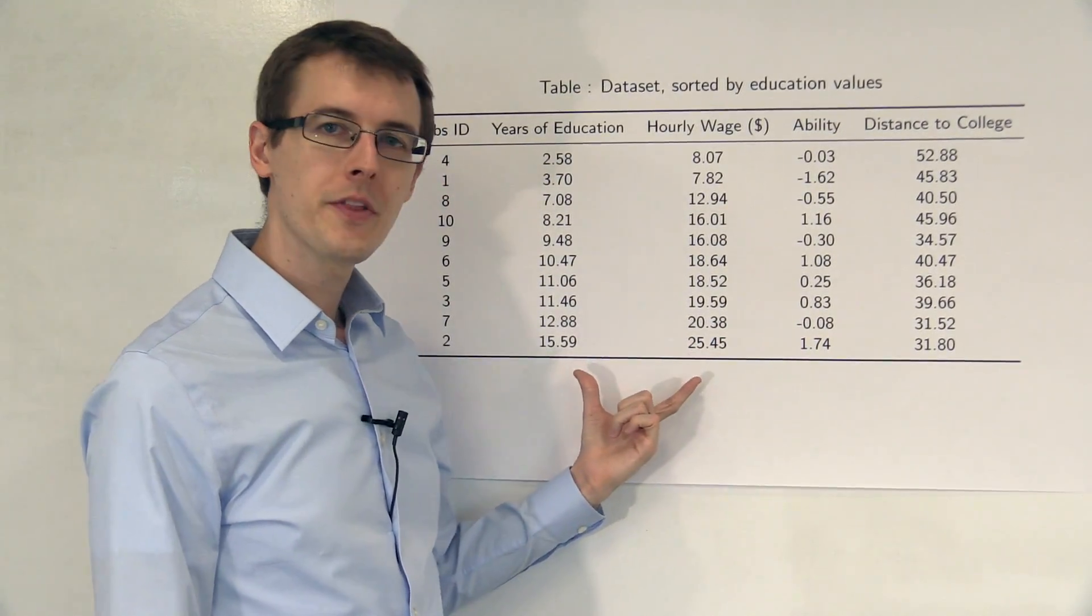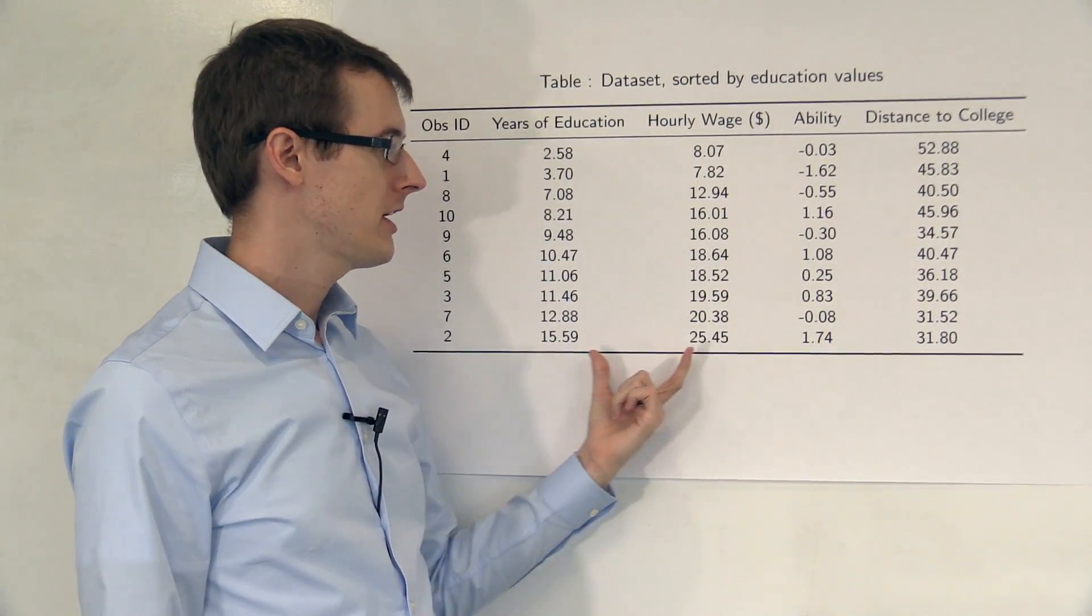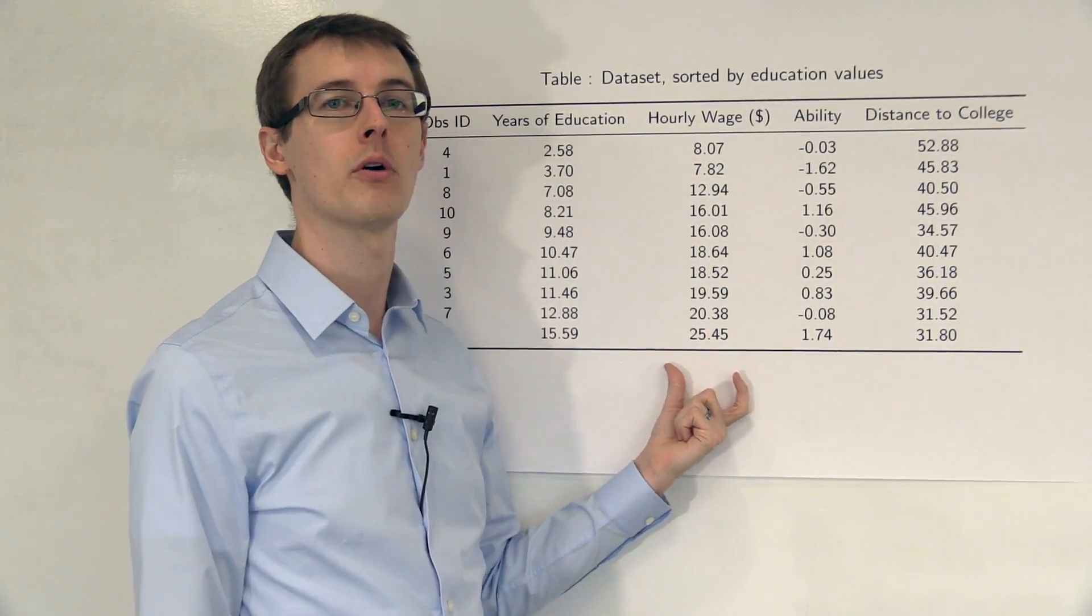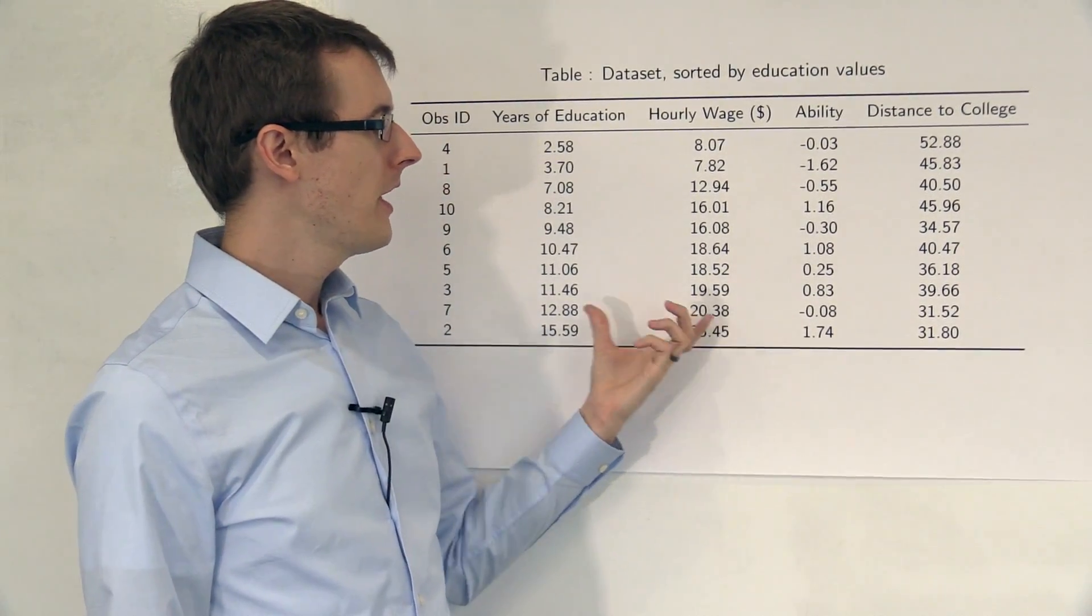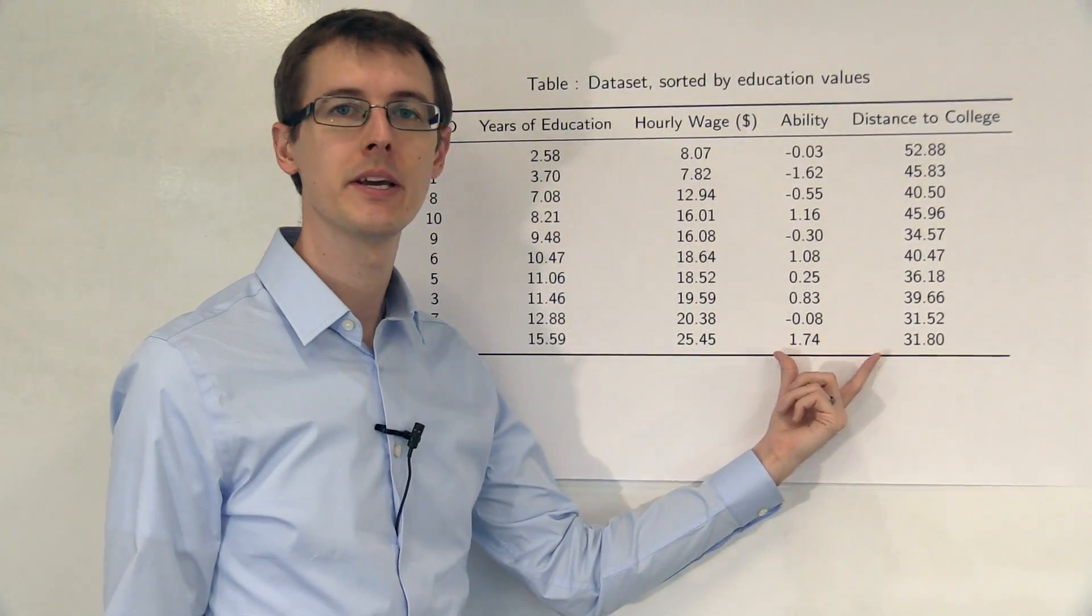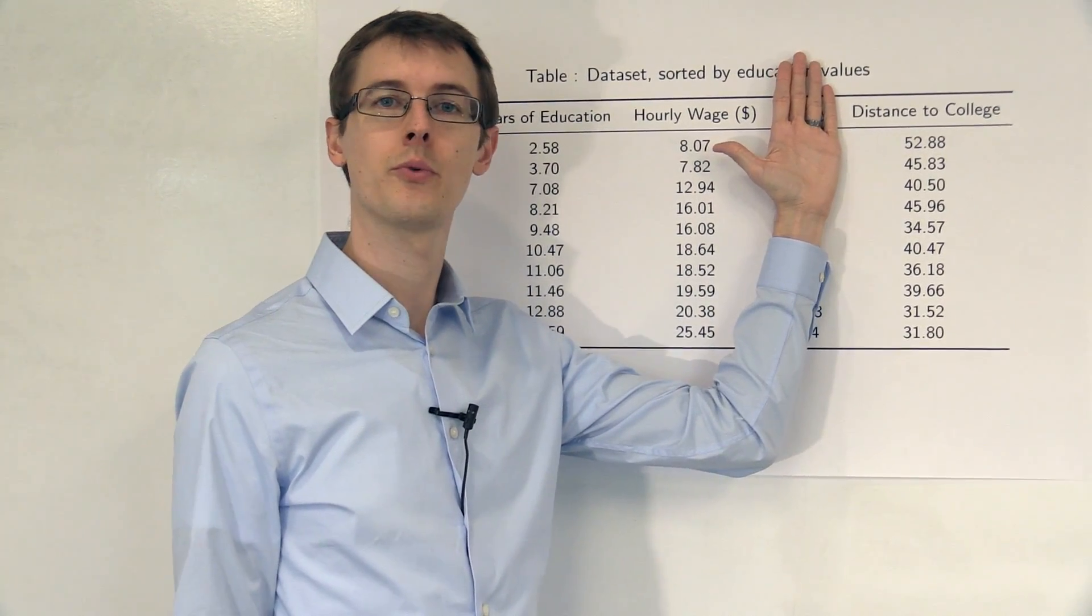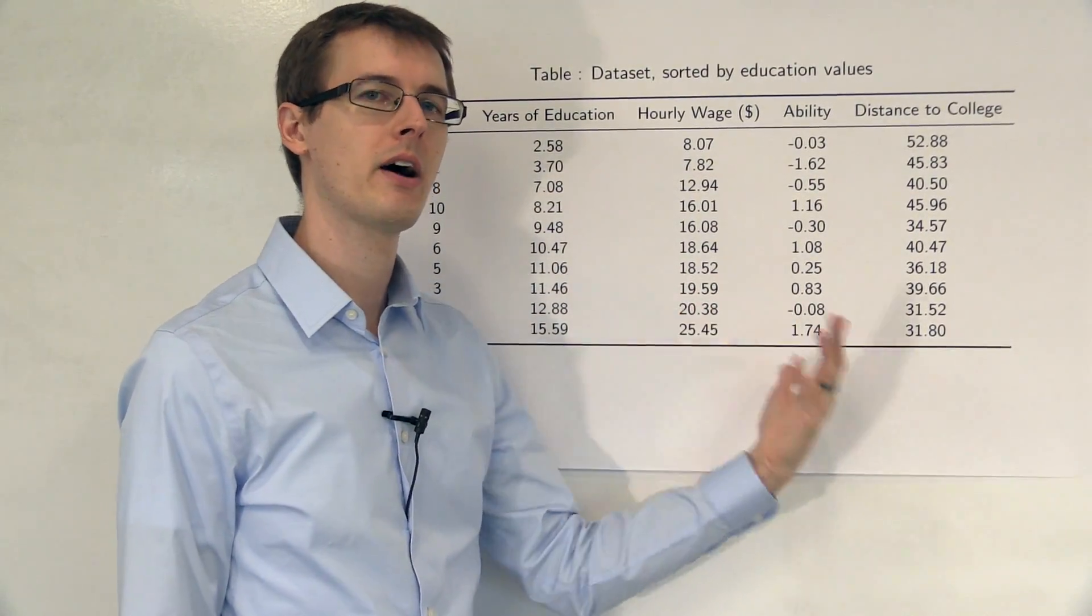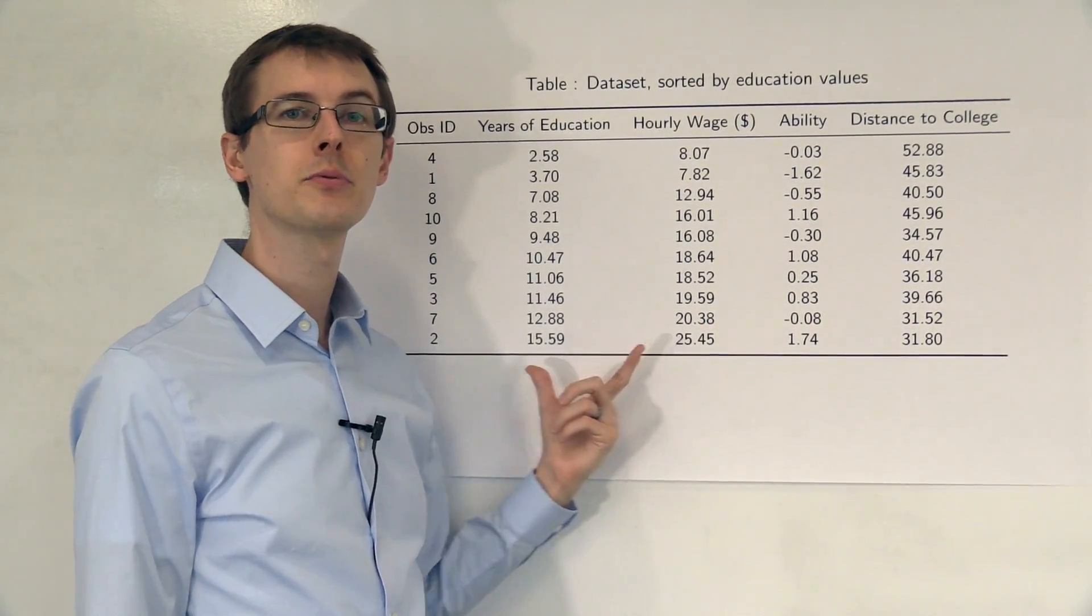So if we look at the data, we see a correlation between education and wage. It's a positive relationship. The more education people have, the more wages they get. So is that a causal effect? Well, maybe not because of ability, which typically isn't observed. So in real data, we can't see this column. There's this unobserved confounder out there that might be driving this relationship.